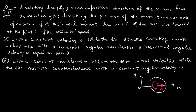We have to find the equation for y as a function of x describing the position of the instantaneous axis of rotation. Initially the center of the disc was at point O. In the first condition, the disc moves with constant velocity v while rotating counterclockwise with angular acceleration β and initial angular velocity equal to zero. In the second condition, the disc moves with constant acceleration w and zero initial velocity while rotating counterclockwise with constant angular velocity omega.